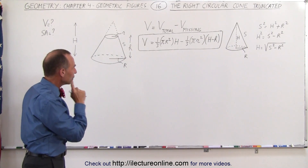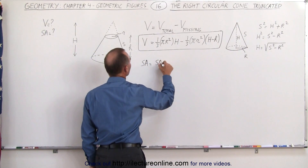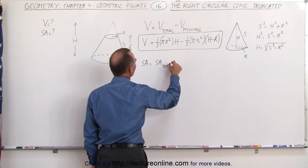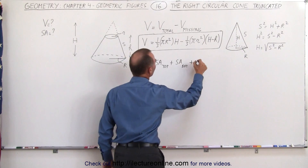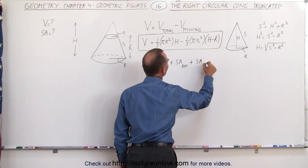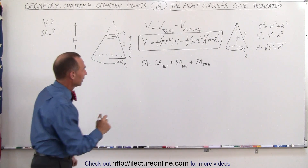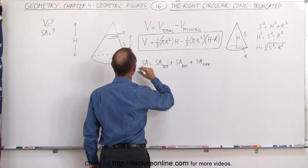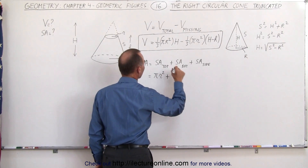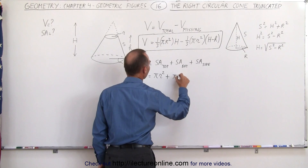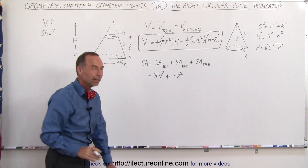The next thing we need to do is write: surface area equals the surface area of the top plus the surface area of the bottom plus the surface area of the side. The surface area of the top, since it's a circle, would be pi times small r-squared, plus the surface area of the bottom, pi times large R-squared. So now we have the top and the bottom, plus the side.